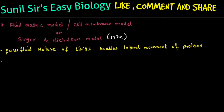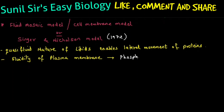The fluidity, smoothness, and ease of movement of substances across the plasma membrane is provided because of phospholipids — this is a very important point for your NEET exam. Fluidity of the plasma membrane is because of phospholipids, and phospholipids are made up of unsaturated fatty acids in the case of the cell membrane.